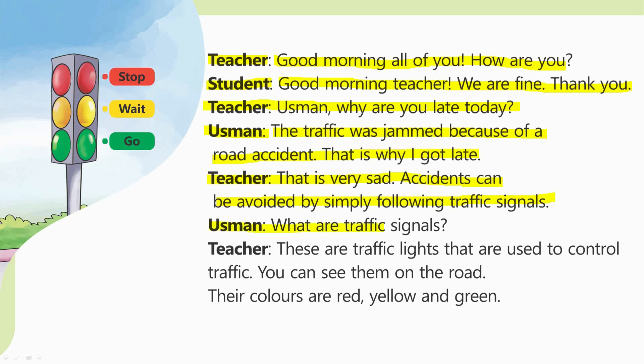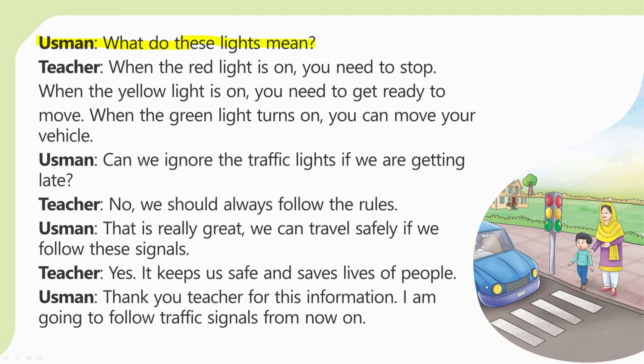Usman: What are traffic signals? (Urdu: Traffic signals kya hai?) Teacher: These are traffic lights that are used to control traffic. You can see them on the road. Their colors are red, yellow, and green. (Urdu: Ye traffic light, traffic ko control karne ke liye istamal hoti hai. Aap inhein sadak par dekh saktay hai. In ke rung hain: lal, pila, sabz.)